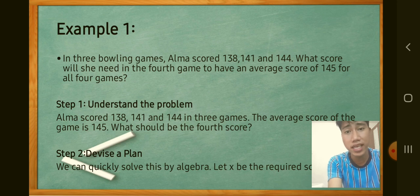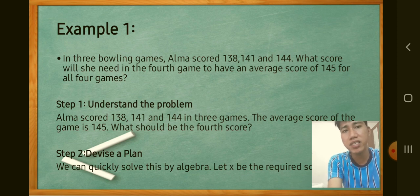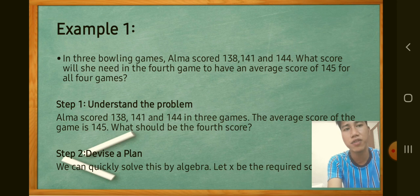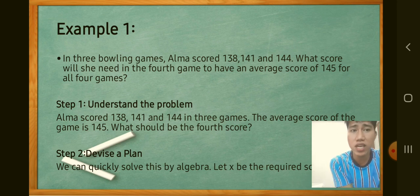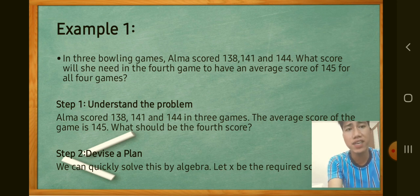Here is an example using George Polya's basic principles. In three bowling games, Alma scored 138, 141, and 144. What score will she need in the fourth game to have an average score of 145 for all four games?